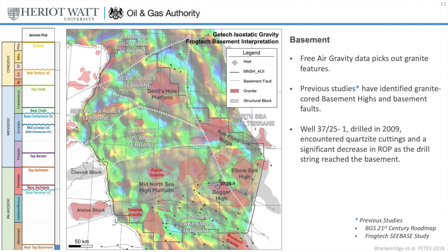We start at the basement. As FrogTech have previously completed a study of the basement on behalf of the Oil and Gas Authority, here we integrate their results into this study. FrogTech has mapped a number of distinct basement terrains that represent the collision of the Avalonia, Laurentia and Baltica Palaeocontinents. The existence of granite intrusions over the area has long been known from gravity studies. Here I show FrogTech's mapped granite intrusions in red on the map. The highlighted well 3725-1 is the only well in the region to reach true basement; it encountered quartzite cuttings and indicates that the basement is formed of granite-cored metamorphics.